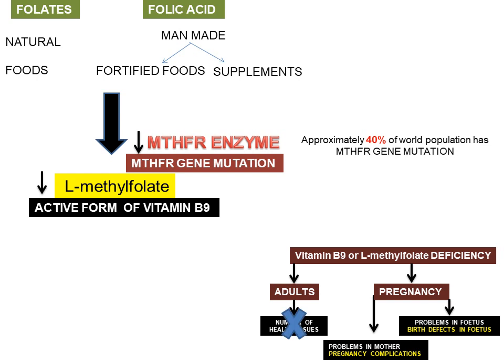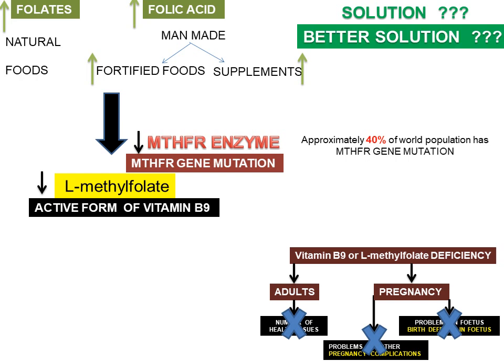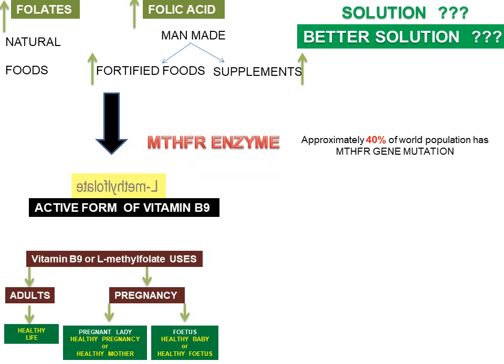We don't want health issues in adults, pregnancy complications, or birth defects in babies. So what is the solution for people who have MTHFR gene mutation? Increasing folate-rich foods or folic acid supplements will not help because there will still be less MTHFR enzyme. Lifestyle modification and diet changes will not help in people having MTHFR gene mutation. The solution is to give them directly L-methylfolate — the active form. In individuals with proper MTHFR function, taking folate or folic acid is good enough, but in individuals with MTHFR gene mutation, give L-methylfolate directly.